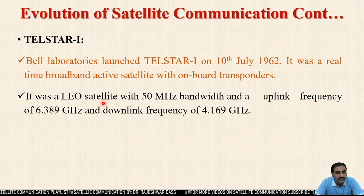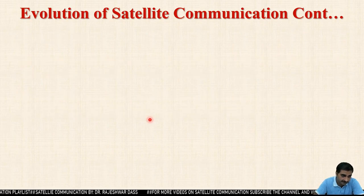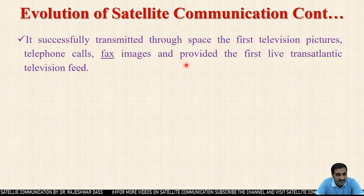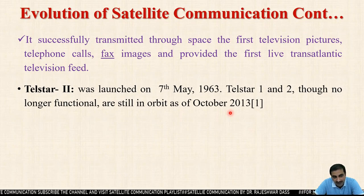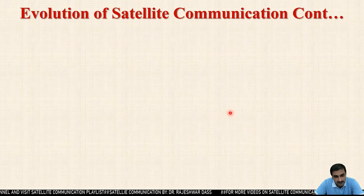Telstar was a real-time broadband active satellite with an onboard transponder. It was a LEO satellite with 50 MHz bandwidth, an uplink frequency of 6.389 GHz, and a downlink frequency of 4.169 GHz. It successfully transmitted through space the first television pictures, telephone calls, and fax images, and provided the first live transatlantic television feed. Telstar-2 was launched on 7th May 1963. It was observed in 2013 that both Telstar-1 and Telstar-2 are no longer functional but are still in orbit.